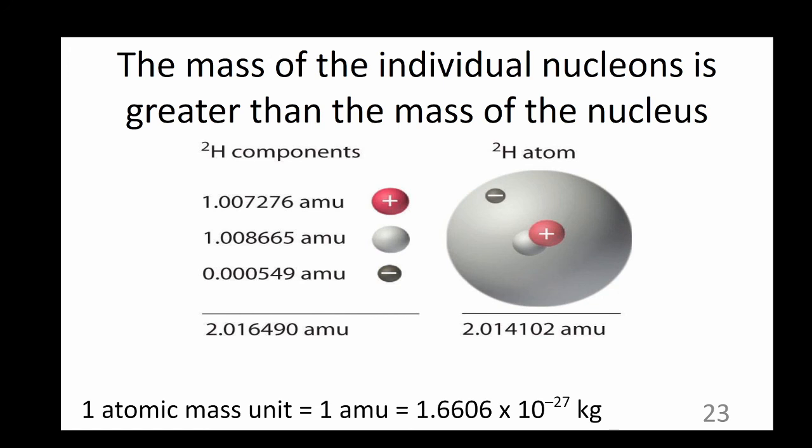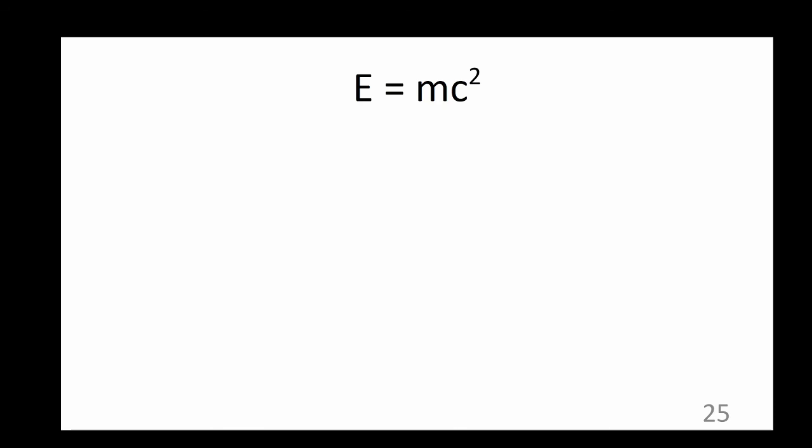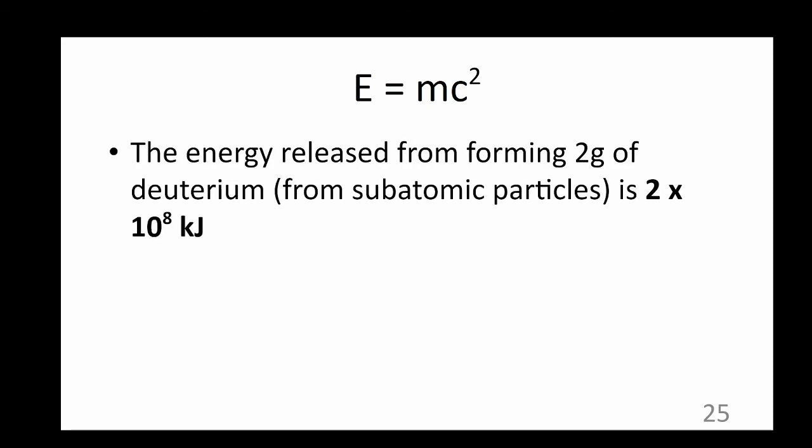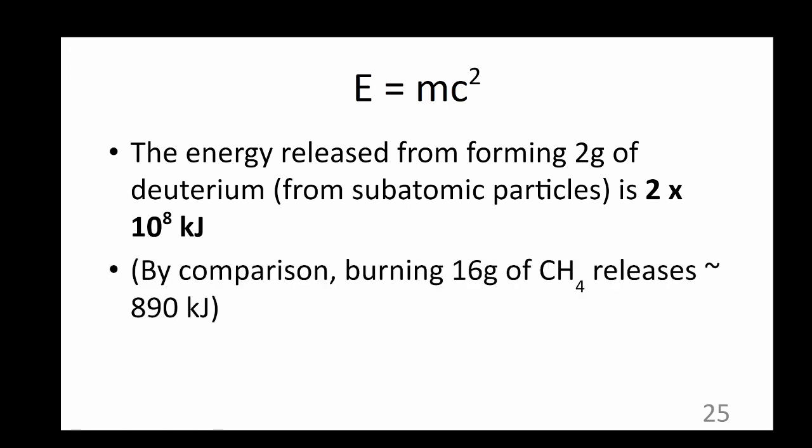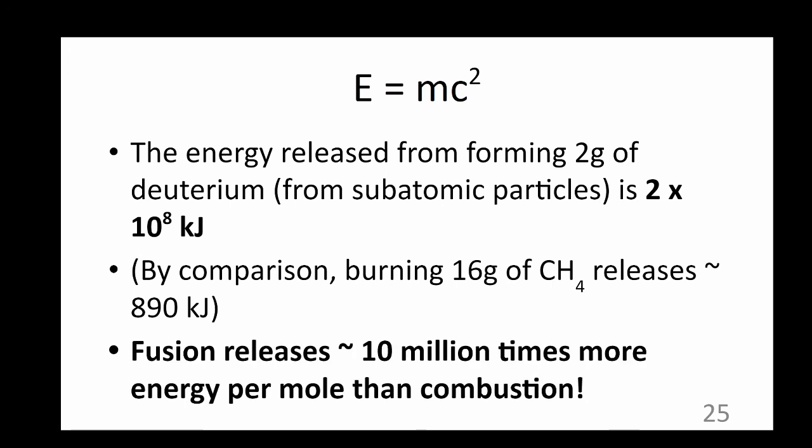Any time a nuclear reaction occurs, there is a mass defect. There is also a change in mass, which translates to a change in energy. If we compare the energy released from a nuclear reaction to a chemical reaction, two grams of deuterium could release up to two times ten to the eighth kilojoules of energy. Compare this to the combustion of methane, where 890 kilojoules is released per mole of methane. Fusion releases roughly 10 million times more energy per mole than combustion. Wow.